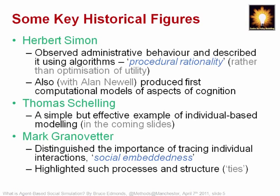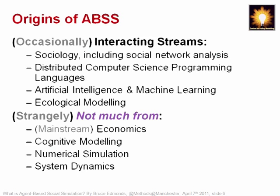Thomas Schelling showed a very simple, dramatic example of individual-based modelling, which I'll show in a moment. Granovetter did two things: he distinguished the importance of social embedding, arguing against oversimplifying social interaction — both against economists who reduce people to prototypical economic actors and against over-socialised models which assume people merely express society. He also gave dramatic examples like the strength of weak ties, which have that agent-based social simulation mindset.